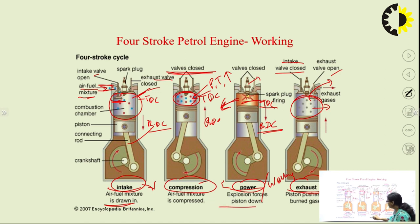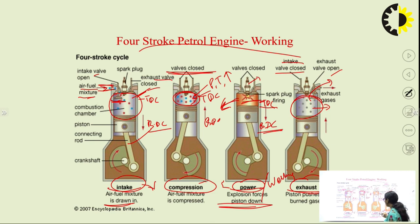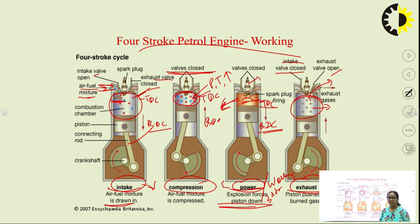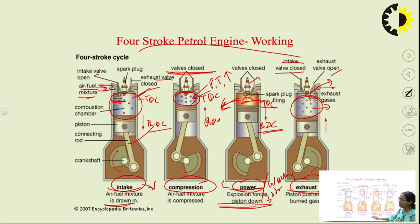In all four strokes of the SI engine, power is produced only in one stroke — the power stroke. In this lecture, we have covered the component details of the IC engine, types of IC engines on different bases, two-stroke and four-stroke engines, SI and CI engines, combustion types, and thermodynamic cycles. In the next lecture, the working of the four-stroke CI engine will be covered. Thank you for watching this lecture.